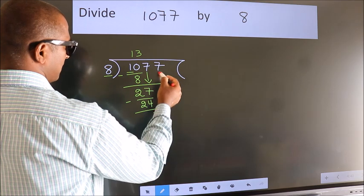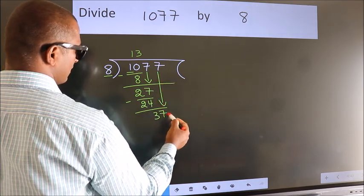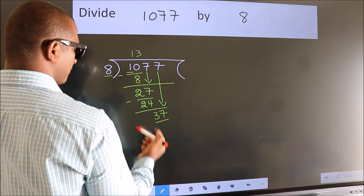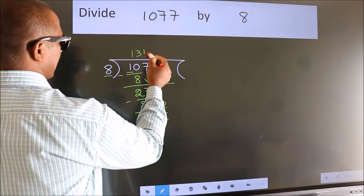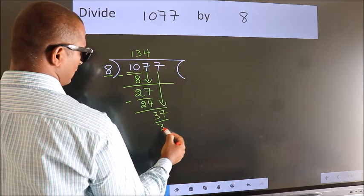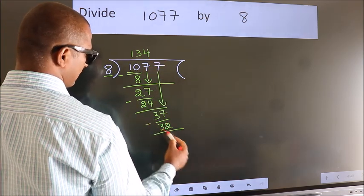After this, bring down the beside number. So, 7 down. 37. A number close to 37 in 8 table is 8 fourths, 32. Now, we subtract. We get 5.